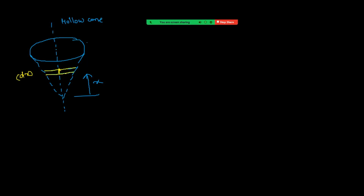For that ring, moment of inertia about this axis is dI = dm·r². Now for dm: since it is a hollow cone, mass will be only on the surface. So we take mass per unit area, that is M upon the surface area of the cone which is πRL.